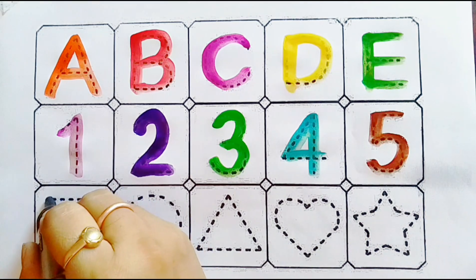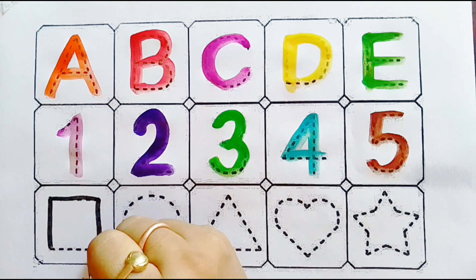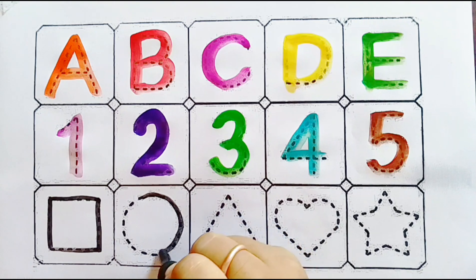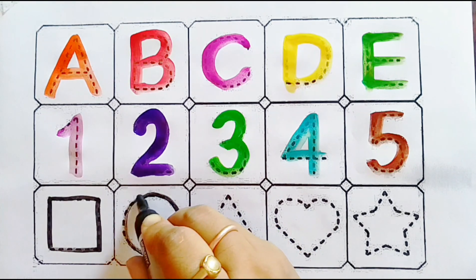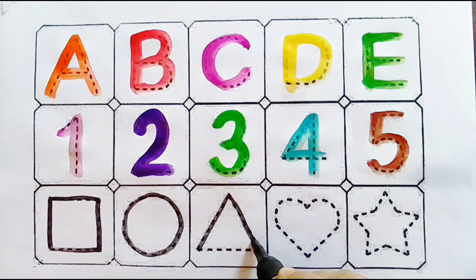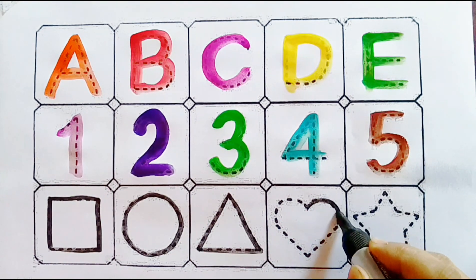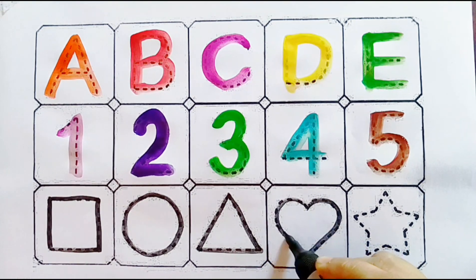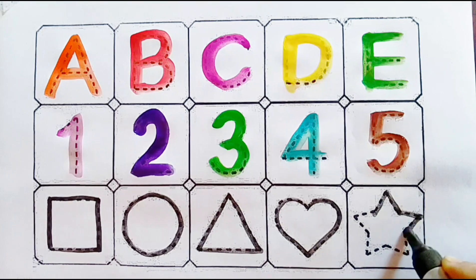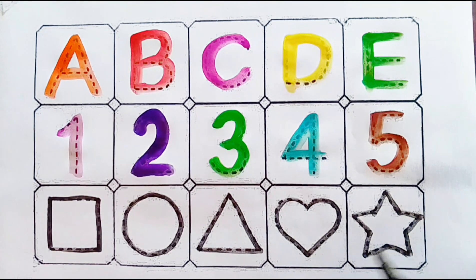Let's draw some 2D shapes. Square. Circle. Triangle. Heart. Star.